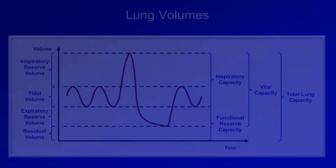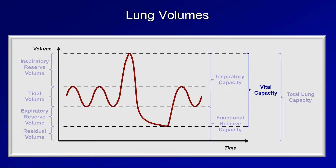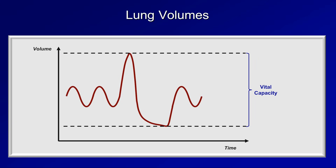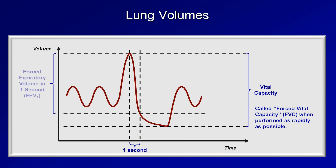Looking at the measures of airflow and volume, the subdivision we'll focus on is the vital capacity. When the vital capacity is measured within the context of standard spirometry — that is, with the patient exhaling as quickly as possible — it is known more specifically as the forced vital capacity, or FVC. The volume of air exhaled during the first second of that forced exhalation is called the forced expiratory volume in one second, or FEV1.